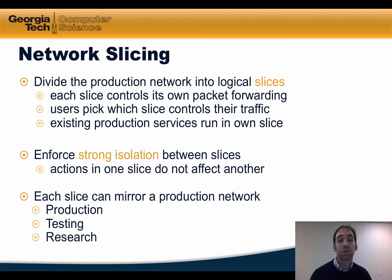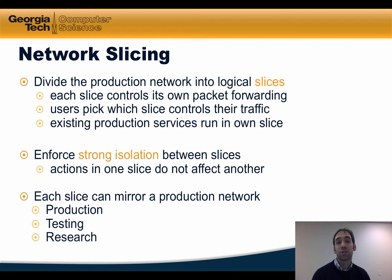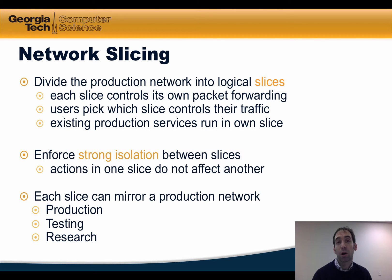Slicing enforces strong isolation between each of the control slices so that actions in one slice don't affect other slices. Each slice can also mirror a production network. These additional slices might be used for testing or for research, for example, for trying out new experimental types of control protocols.